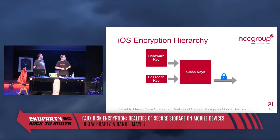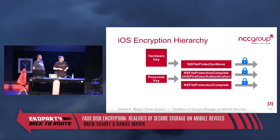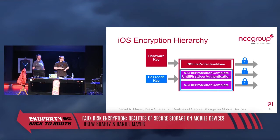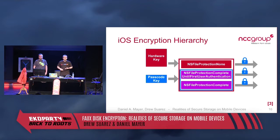There are three file protection classes. 'File protection none' is tied only to hardware. 'File protection complete until first user authentication' protects the phone while it's off — once you unlock it the first time, the key stays in memory. 'File protection complete' is the strongest: the key is deleted from memory every time you lock the device, so you must enter your passcode again to access the data.